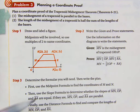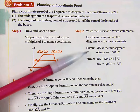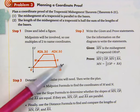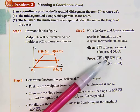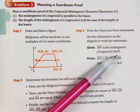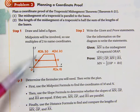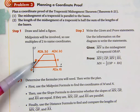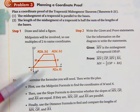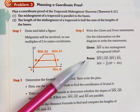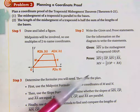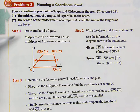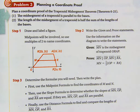Step two of planning a proof is to write the given and proof statements. Using our picture, the given is that segment MN is the midsegment of trapezoid ORAP. Then what are we supposed to prove? We're supposed to prove that midsegment MN is parallel to both OP and RA, and that the measure of MN equals half the sum of the measures of the two bases. The picture is the illustration of the given and proof.